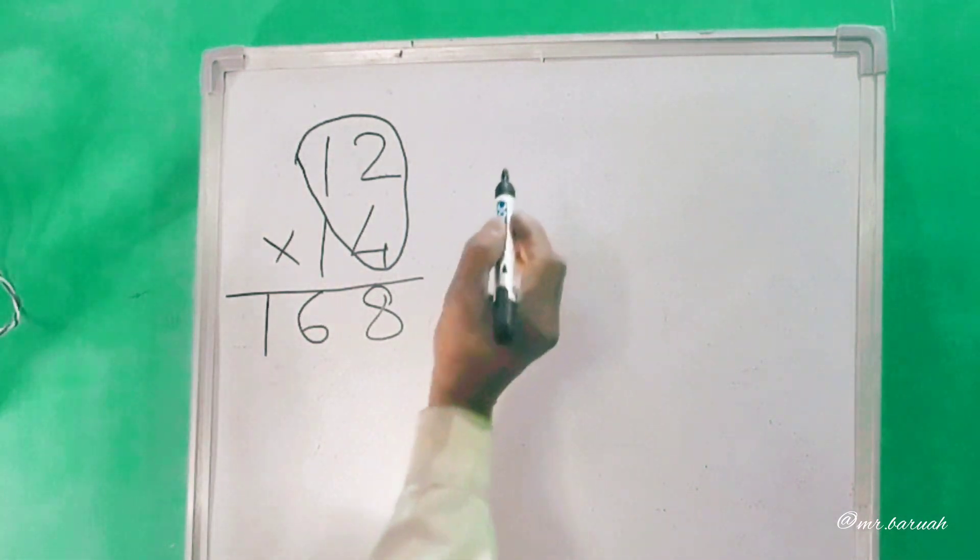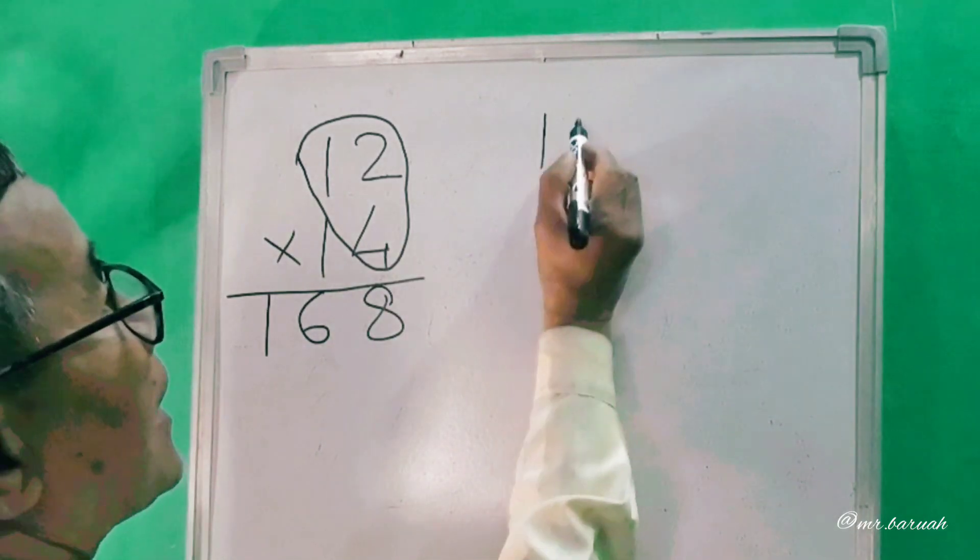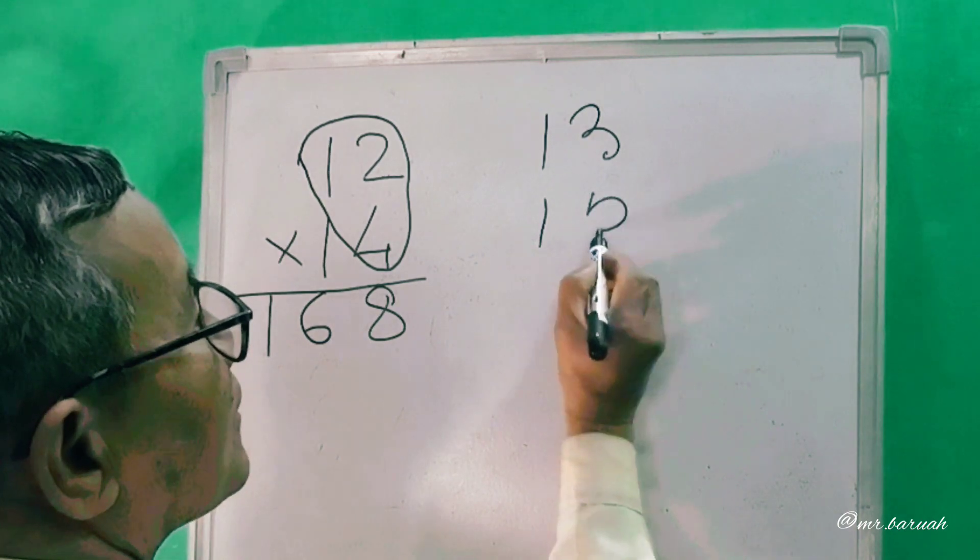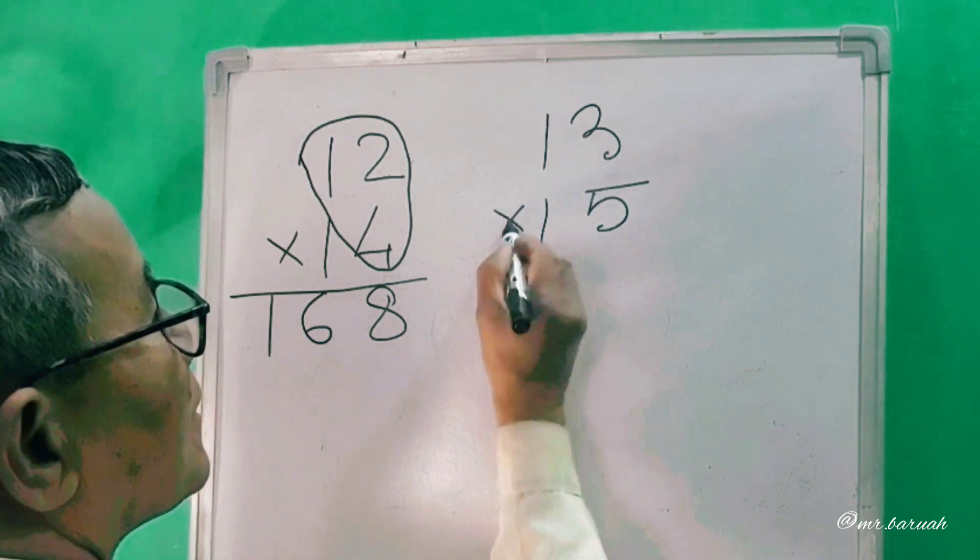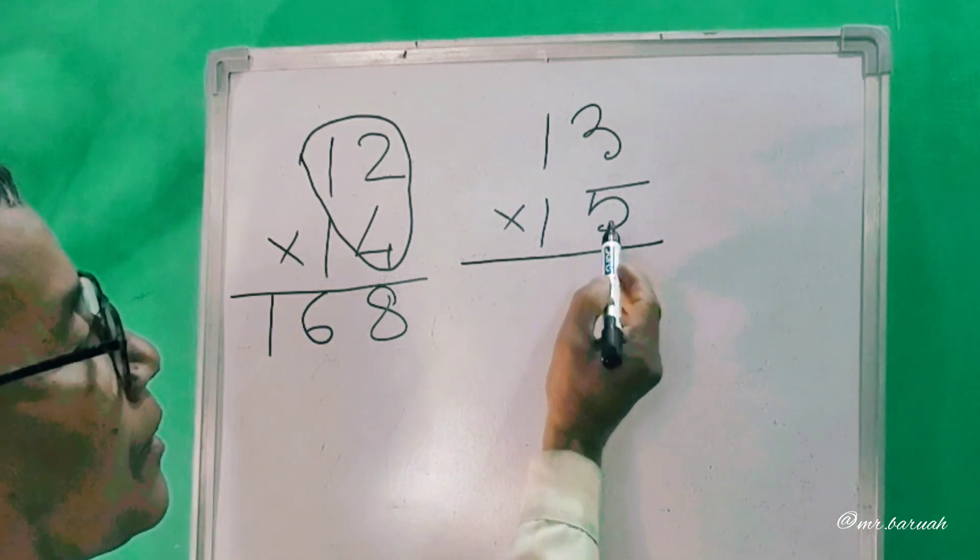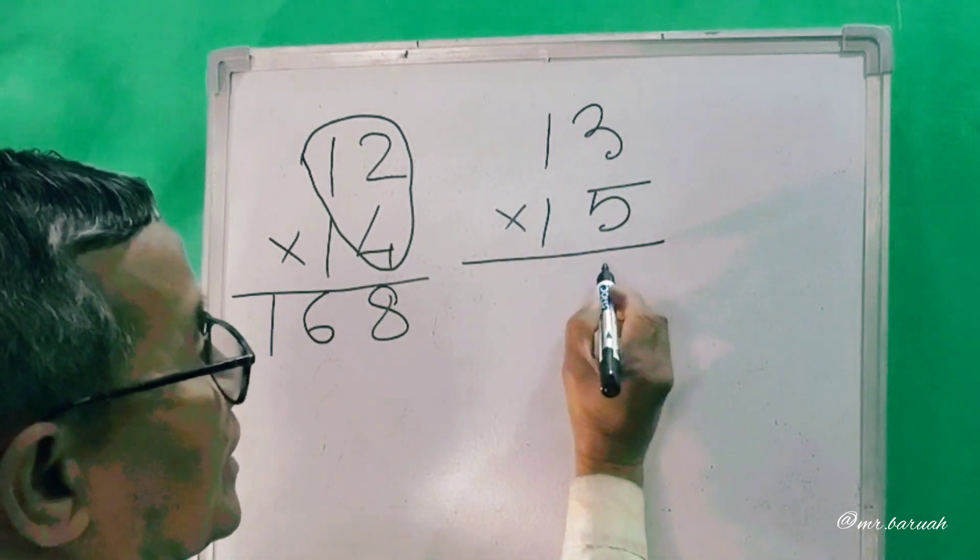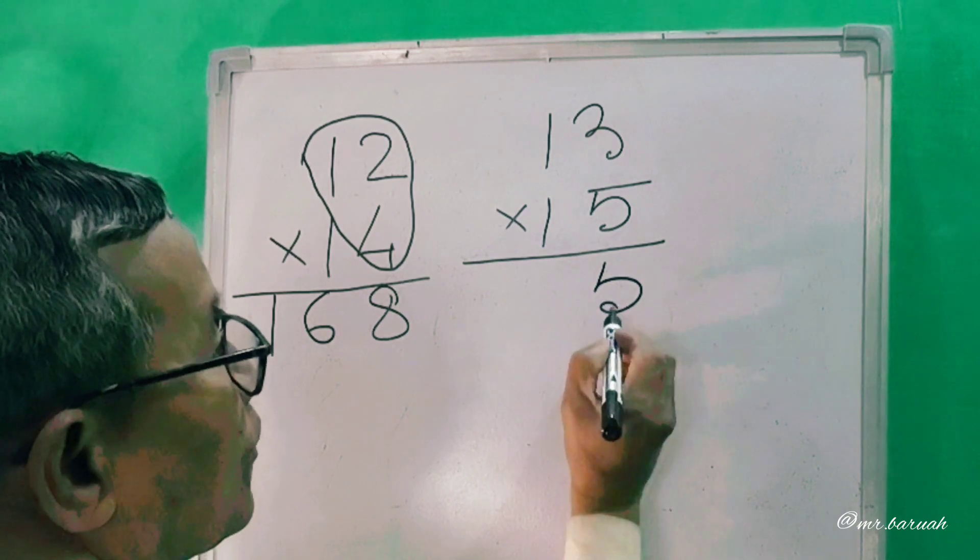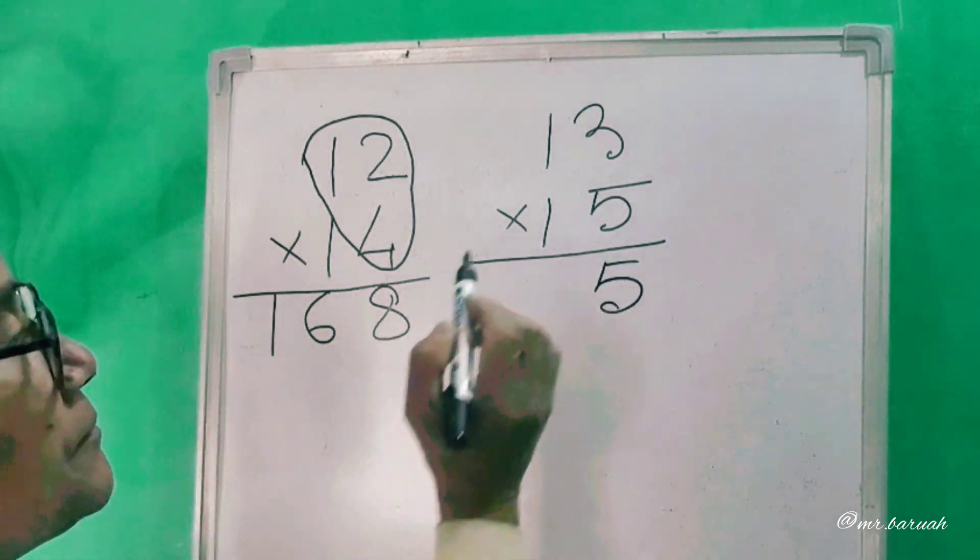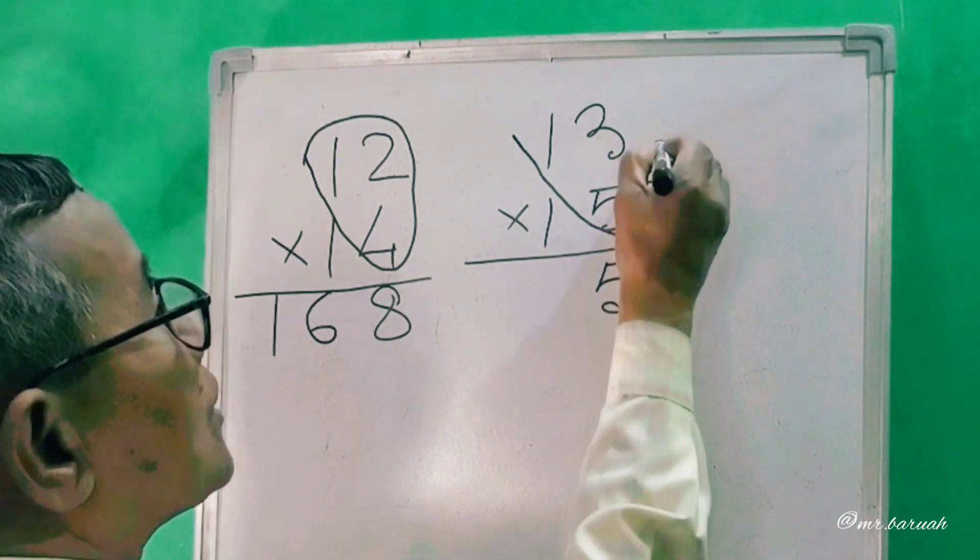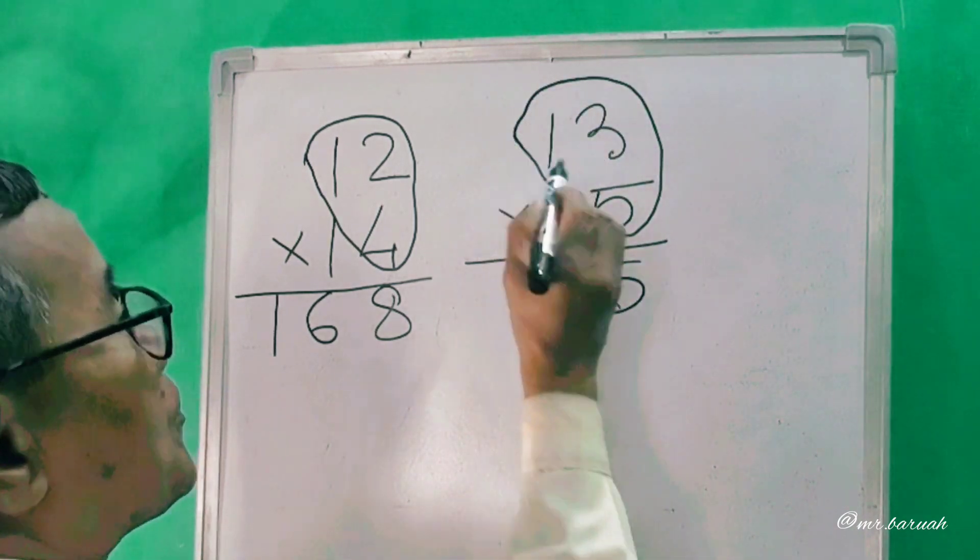The first step is 13 into 15. 5 into 3, 5 into 15 is 15. 1 in hand. The first step is 13 and 5 into 15.